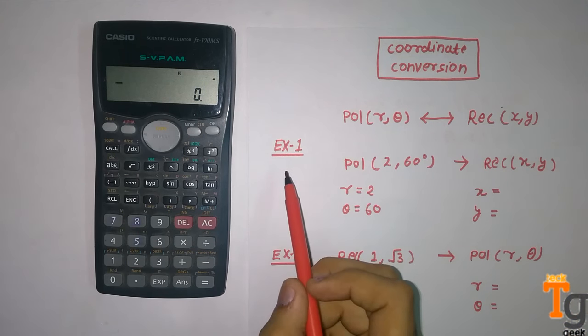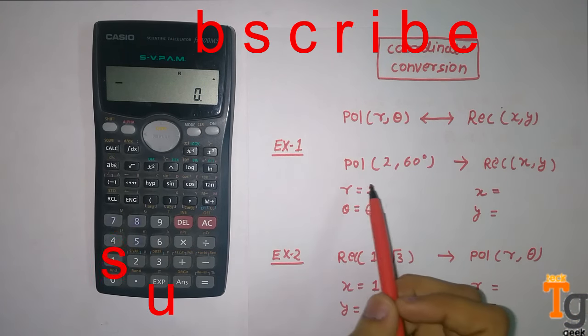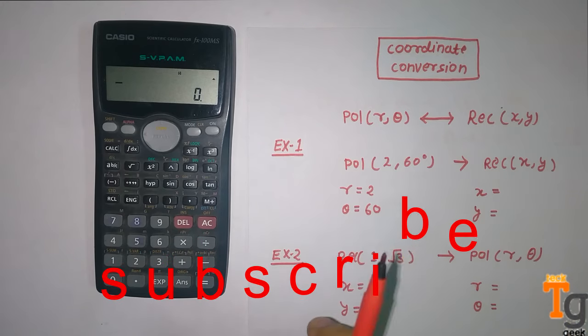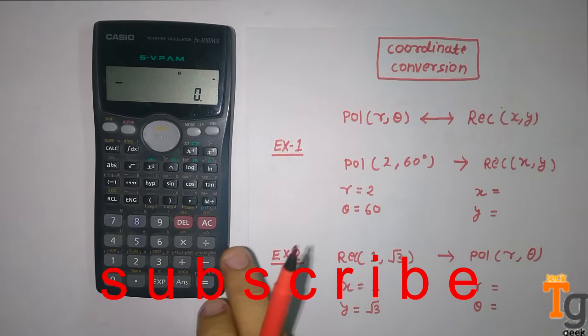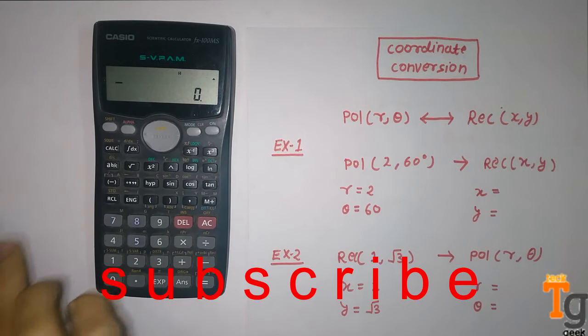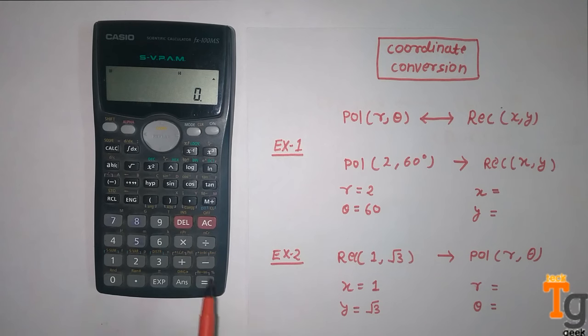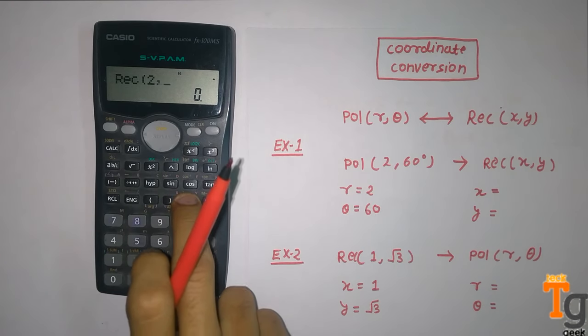The first example is to convert polar form to rectangular form. To enter this form in the calculator, simply press shift and then the minus button to enter values. The value is r equals 2 and theta equals 60.